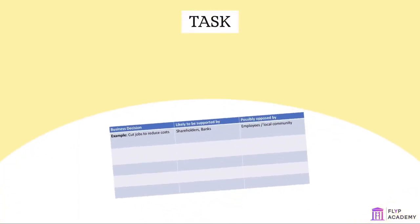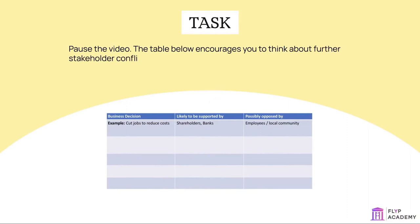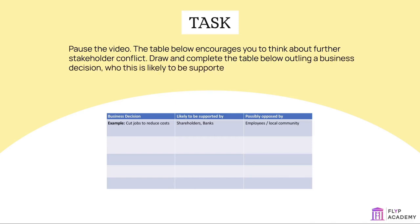Task: Pause the video. The table below encourages you to think about further stakeholder conflict. Draw and complete the table, outlining a business decision, who it is likely to be supported by, and who it may possibly be opposed by.